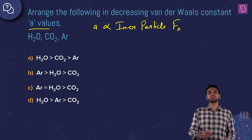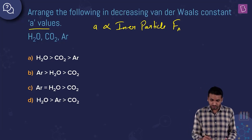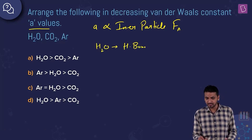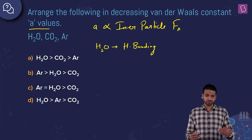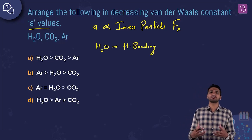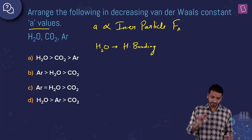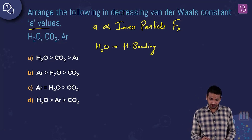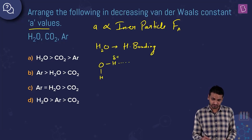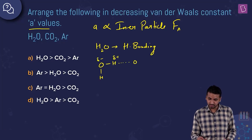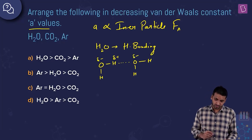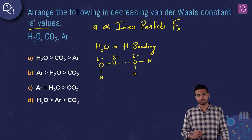Let's check for H₂O first. H₂O has hydrogen bonding. Hydrogen bonding is a weak Van der Waals force of attraction, but it is the strongest among weak Van der Waals forces. It forms due to attraction between a partially positive hydrogen and a partially negative oxygen. This is hydrogen bonding in water.